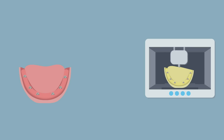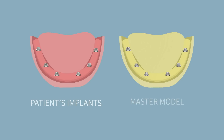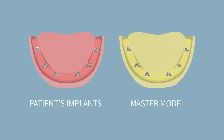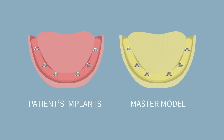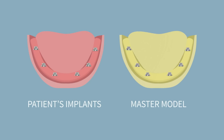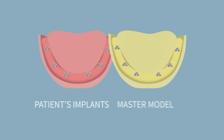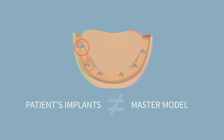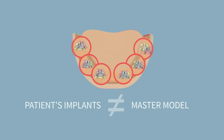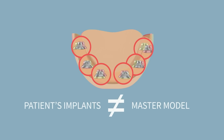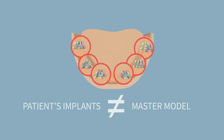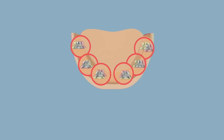Whether you are using conventional methods or CAD-CAM systems when producing the master model, there's no guarantee of matching the patient's implants. If the master model is not identical to the patient's mouth, the prosthesis might not fit the patient's implants, so the structure and the impression must be retaken.